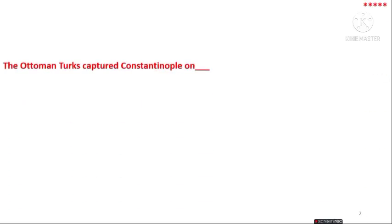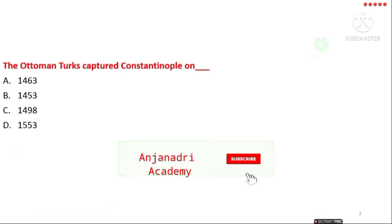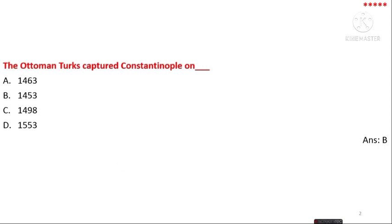The first question is: the Ottoman Turks captured Constantinople on which date? The options are 1463, 1553, 1498, and 1453. The answer is option B — in 1453, the Ottoman Turks captured Constantinople.